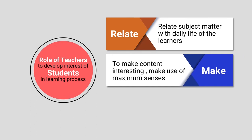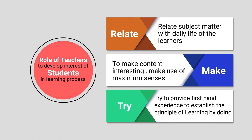The second point is that as a teacher, we need to make content interesting — that means we should make use of the maximum senses of the learner. The third point is that we should try to provide first-hand experience to learners to establish the principle of learning by doing. For example, if possible, we can take students on field trips or educational visits where we can give first-hand experience, and this type of activity will definitely help learners to develop their interest.